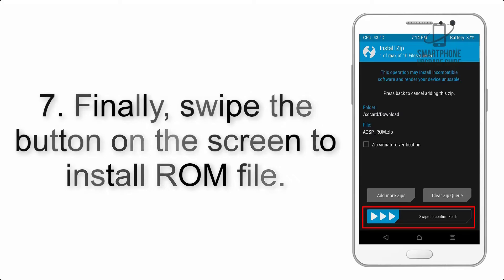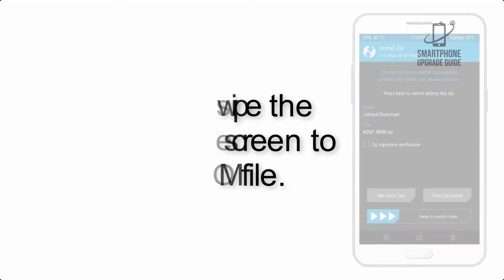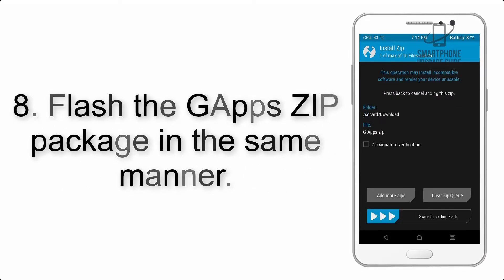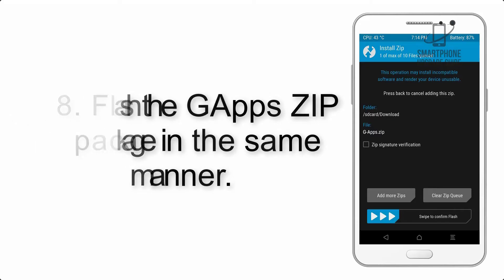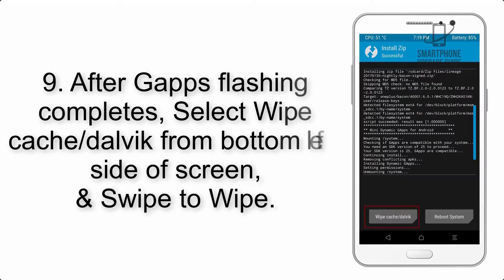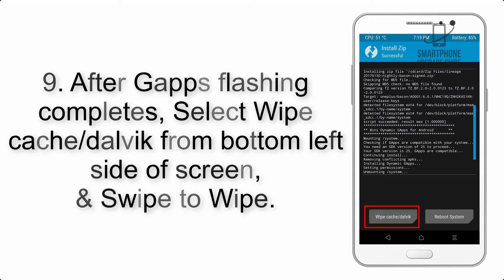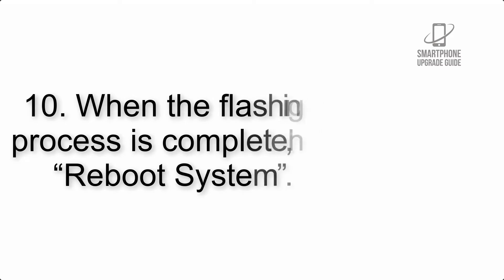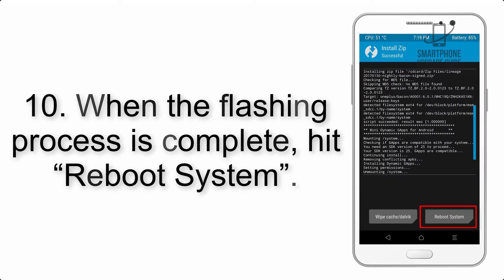Step 7: Swipe the button on screen to install the ROM file. Step 8: Flash the GApps zip package in the same manner. Step 9: After GApps flashing completes, select Wipe Cache and Dalvik from the bottom left side of the screen and swipe to wipe.